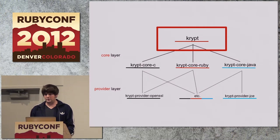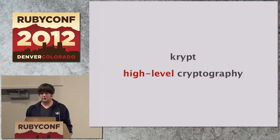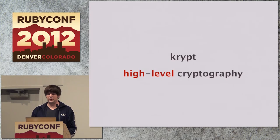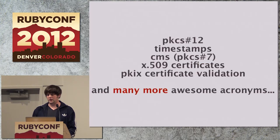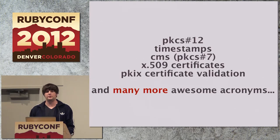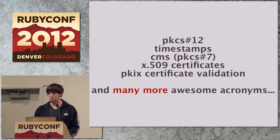On top of all of this is Crypt itself. You can think of Crypt as the high-level cryptography layer. It's written entirely in Ruby, no native code. And it implements a lot of those fancy acronyms — higher-level protocols that use the lower-level primitives to achieve some form of protocol.